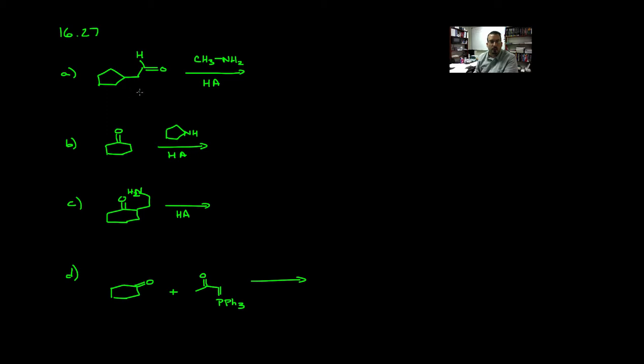For part A, we can see that the major functional group is an aldehyde. We're treating that aldehyde with an amine. This is a primary amine in the presence of a catalytic amount of acid. We're going to abbreviate that acid as HA.